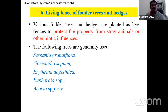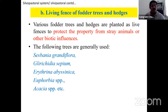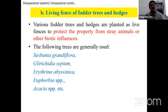Other agroforestry systems include apiculture — flower-inducing tree species are planted nearby and bees are kept there for honey production. Aquaforestry involves planting trees on the boundaries of ponds for multiple benefits; tree species like moringa, Pongamia mea, and rubber trees are planted. Silvohorticulture involves planting trees with fruit trees like mango. Agri-horticulture integrates crops with fruit trees — mangoes planted with groundnut or other crops.